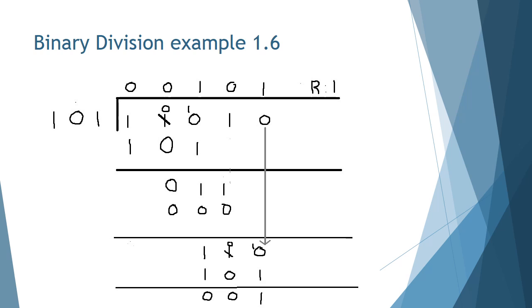Next, we multiply this 1 by 1-0-1 and write it beneath the 1-1-0. And we have to perform a binary subtraction. So the rightmost digit in our subtraction is 0-1. And we know 0 cannot be subtracted from 1. So again, we have to borrow. So borrowing from the 1 to the left, it becomes a 0.